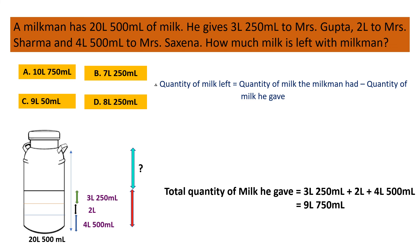Now let us find out how much milk is left with the milkman. The quantity of milk left is equal to the quantity of milk the milkman had minus the quantity of milk he gave. The milkman had 20 liter 500 milliliter, and he gave 9 liter 750 milliliter. So the quantity of milk left is equal to 20 liter 500 milliliter minus 9 liter 750 milliliter, which equals 10 liter 750 milliliter. The correct option is A.